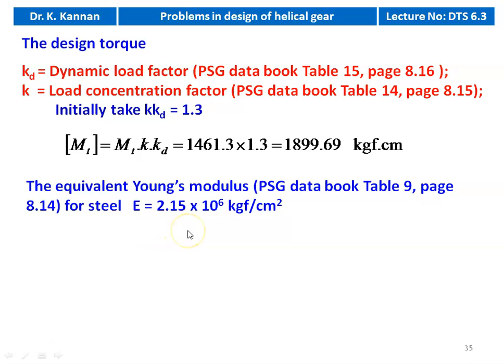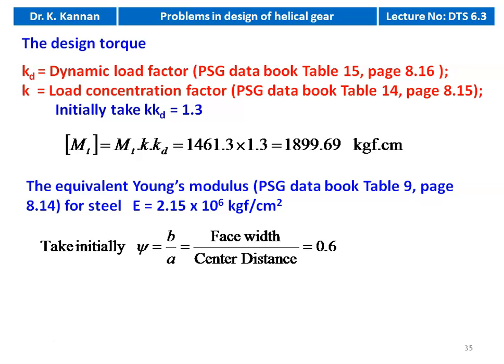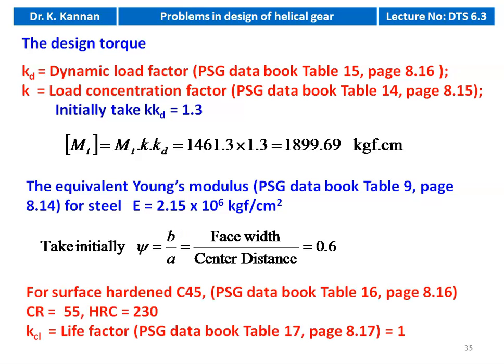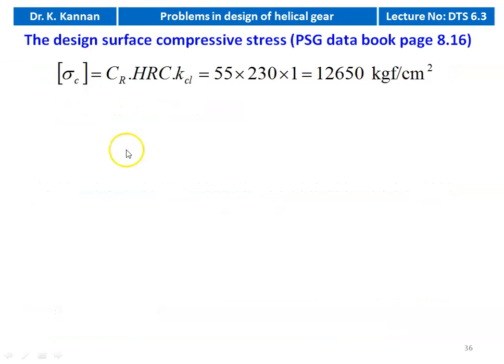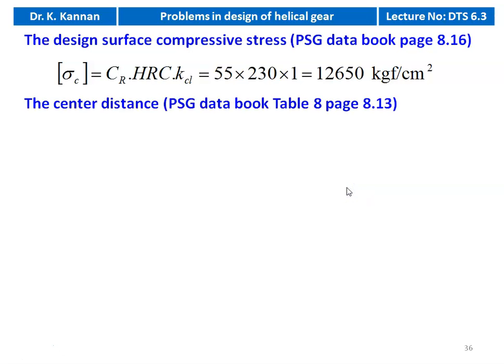Young's modulus for steel from page 8.14, table 9: E = 2.15 × 10⁶ kgf/cm². Take ψ = B/A = 0.6. For design compressive stress, we need CR and HRC values from page 8.16, table 16: CR = 55, HRC = 230, life factor KCL = 1. Design compressive stress: σC = CR × HRC × KCL = 55 × 230 × 1 = 12,650 kgf/cm².